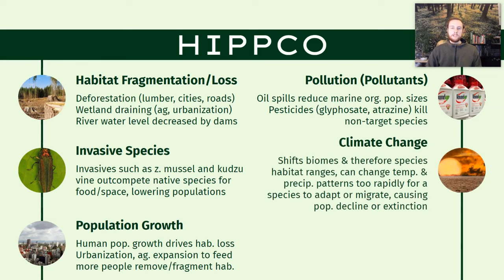Then we have the C, which is climate change. Climate change is a huge threat to biodiversity — it shifts habitat locations, it shifts biomes, and it can remove certain habitats. Sea level rise will lead to fewer coastal ecosystems as they become flooded and estuaries become more salty, so that's another major threat to biodiversity.